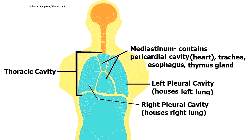The thoracic cavity, also called the chest cavity, sits superior to the abdominal pelvic cavity and contains organs such as the heart, lungs, trachea, and esophagus. It can be subdivided into three main portions.